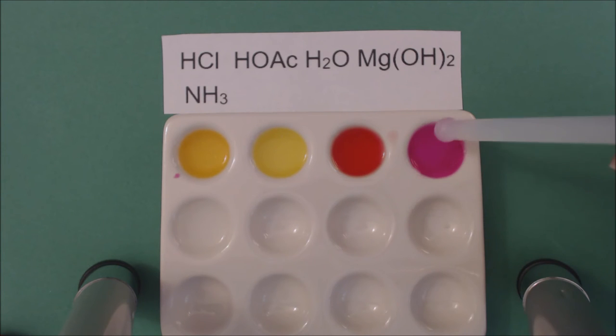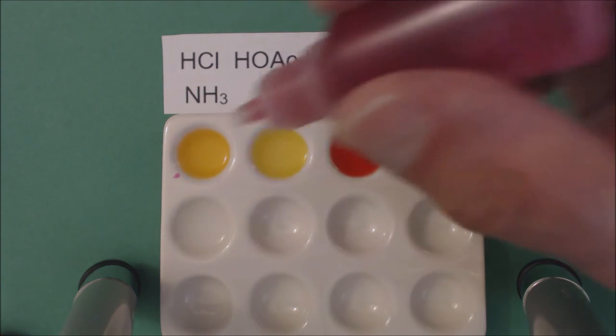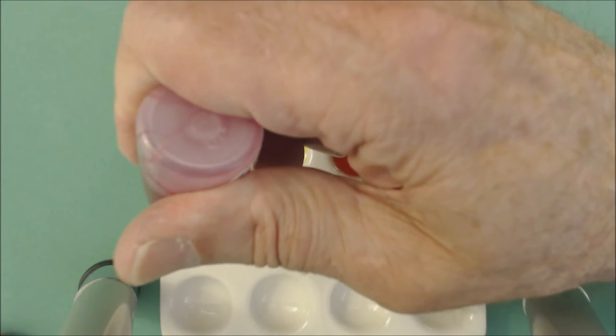Milk of magnesia—you can see that that's really more pink, this is kind of a reddish orange. And finally, the ammonia.